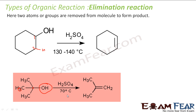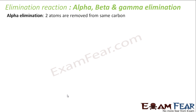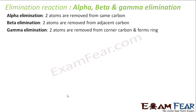In elimination reactions there are three types: alpha, beta, and gamma elimination. In alpha elimination, two atoms are removed from the same carbon. In beta elimination, two atoms are removed from adjacent carbons. In gamma elimination, two atoms are removed from corner carbons to form a ring.